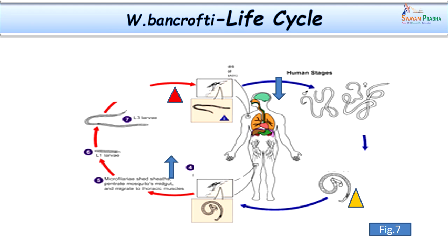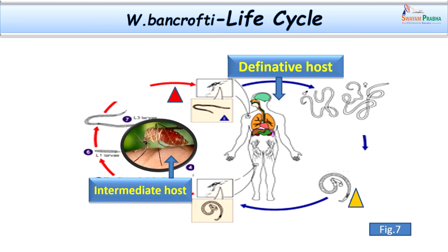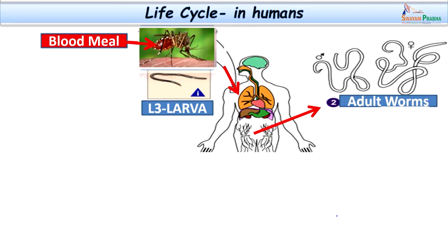After having learnt the morphology, let us learn about the life cycle. Learning the life cycle of Wuchereria bancrofti is important because understanding the details helps us develop better therapeutic approaches and also helps us collect samples at the right time. Wuchereria bancrofti completes its life cycle in two different hosts: the definitive host and the intermediate host. Man is the definitive host because adult worms exist in man and sexual reproduction takes place here. The intermediate host is the mosquito, where larval development — asexual reproduction — takes place. The infective forms are L3 larvae, which are injected into the human skin when the Culex mosquito bites while taking its blood meal.